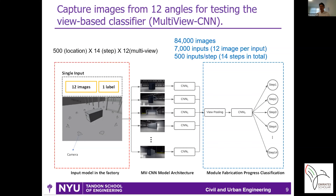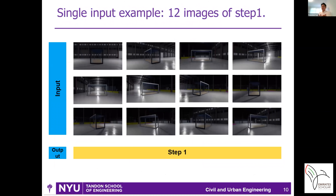To build a classifier for the module assembly progress, we utilized a pre-trained multi-view convolutional neural network — MVCNN. MVCNN is a supervised deep learning model that recognizes objects based on images. It requires 12 images and one label as a single input. The architecture consists of multiple convolutional networks to classify given images. A single input consists of 12 images from 12 fixed-angle virtual cameras, labeled as a specific step — for example, step one, representing the first step of module fabrication.